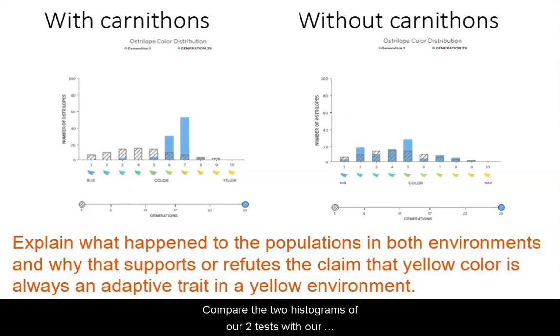Compare these two histograms of our two tests with our ostrilopes. Both populations of ostrilopes were in environments with color number seven as the background. The histogram on the left shows our first round where we had carnithons in the environment. The histogram on the right shows our environment with no carnithons. On your paper, or with the person you are sharing with, explain what happened to the populations in both environments, and why that supports or refutes the claim that yellow color is always an adaptive trait in a yellow environment.